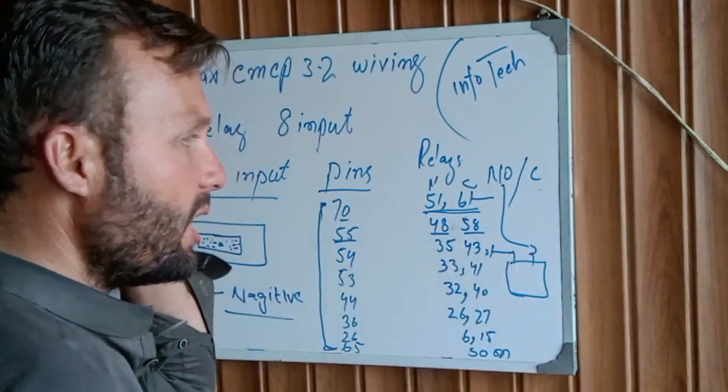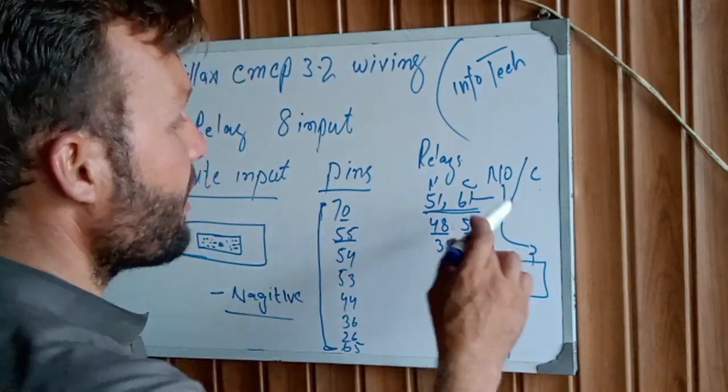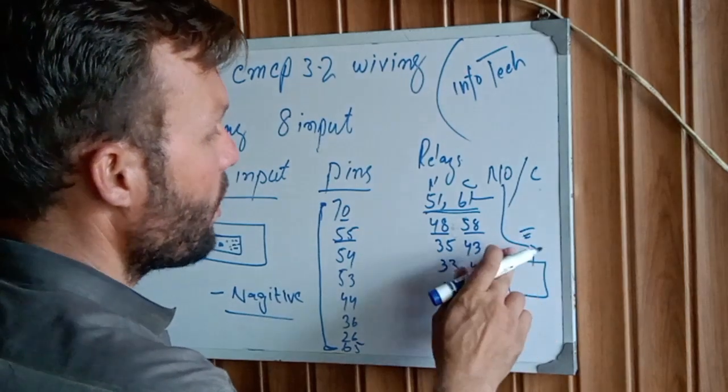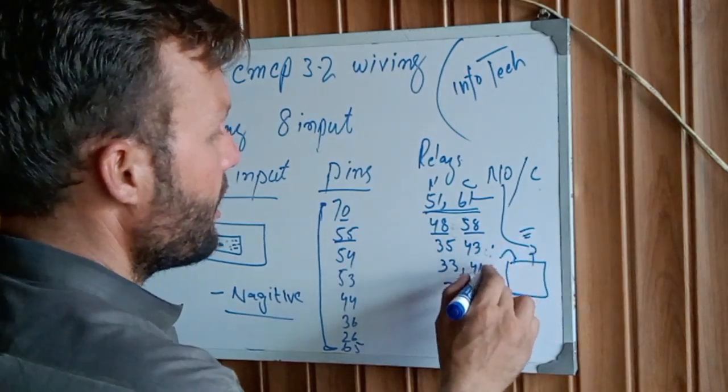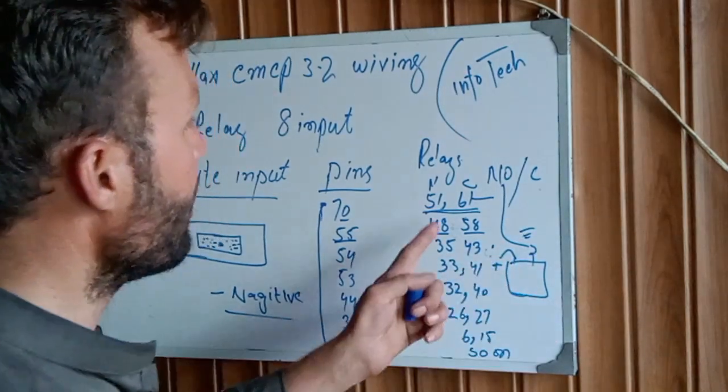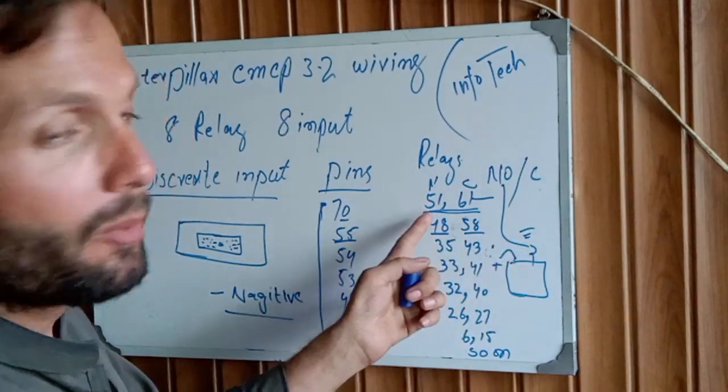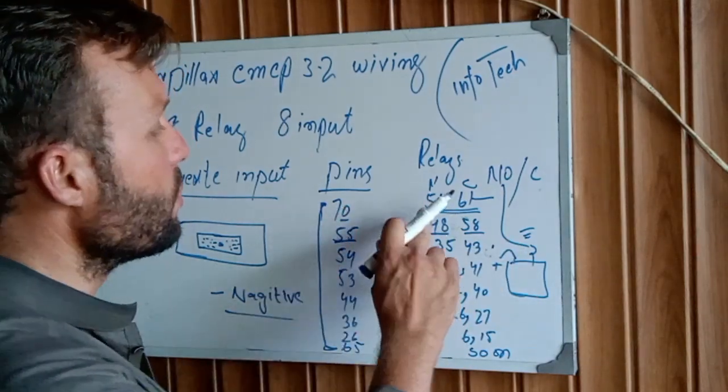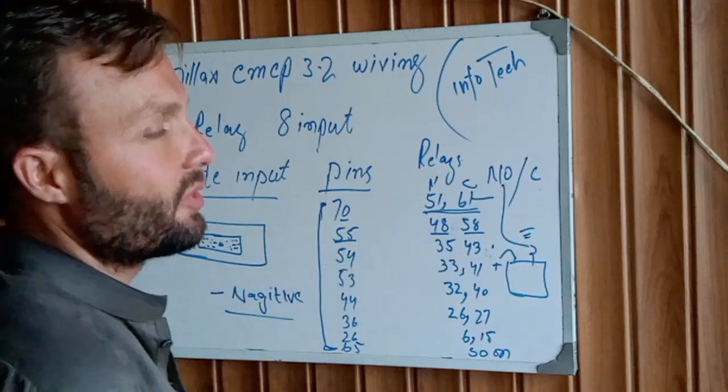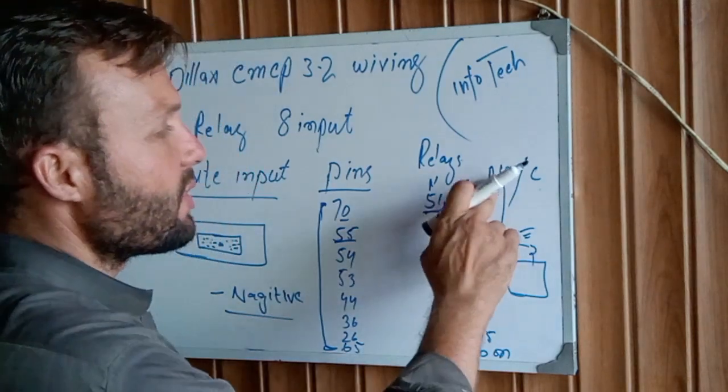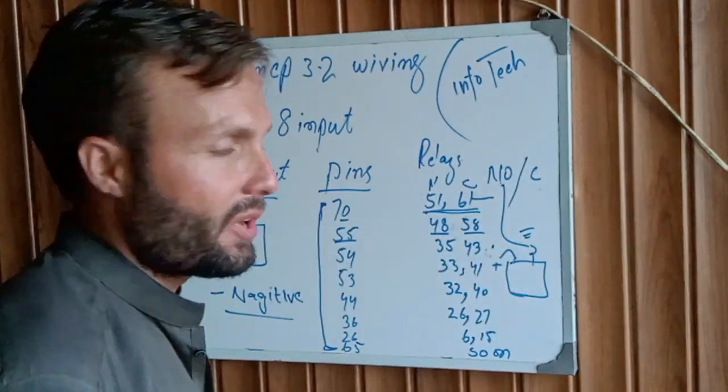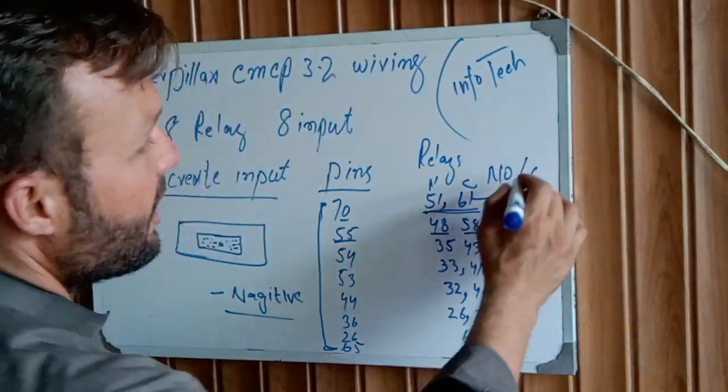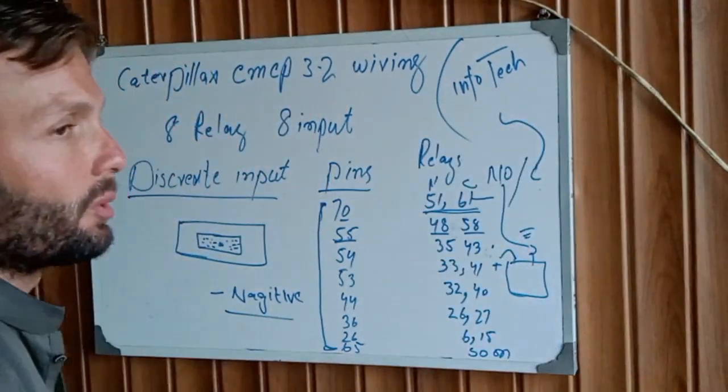And another side is relay positive, or relay negative. One side of the relay is jumped with the battery positive and one side is turning on with the EMC P3.2 51 and 61 contacts. This is our NO and common contacts. This common contact is for using to the load side.